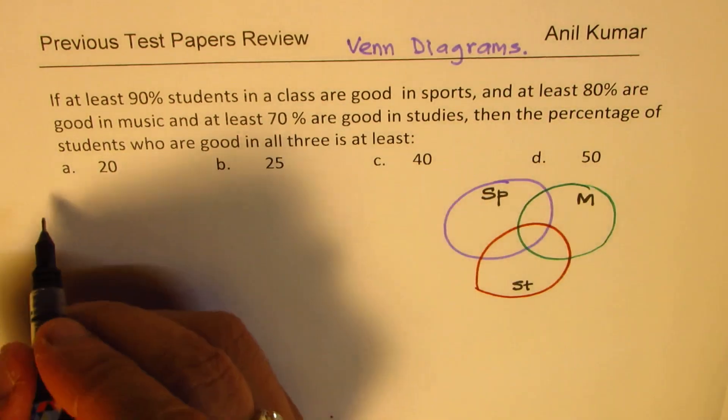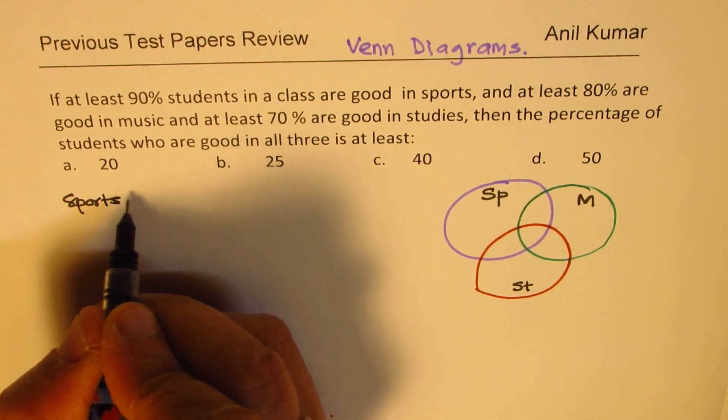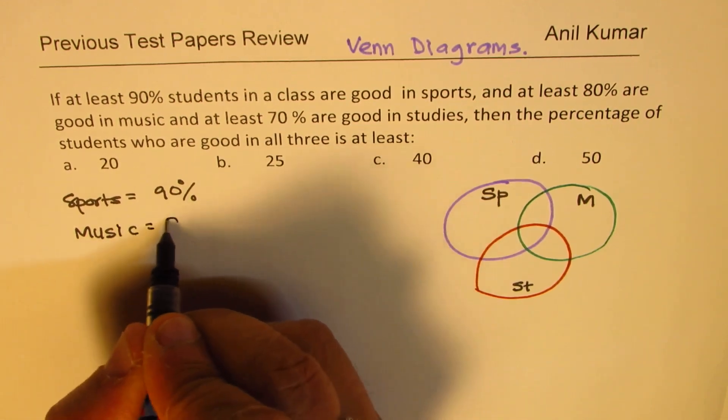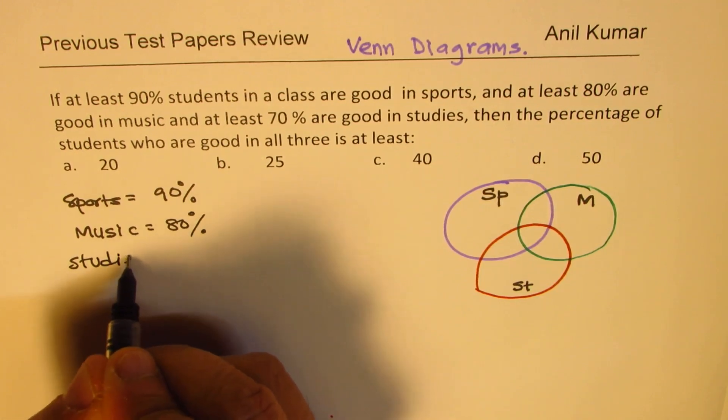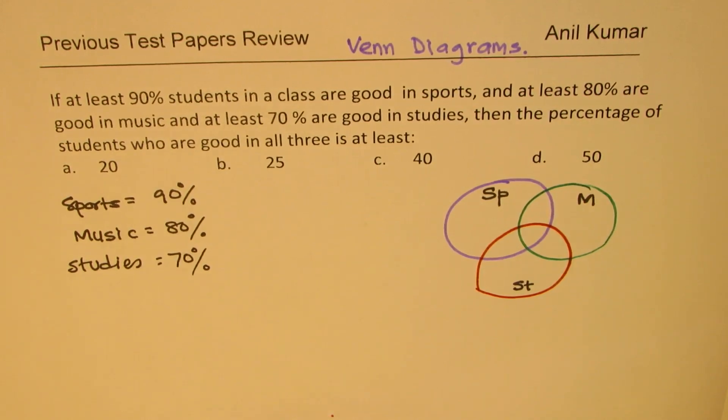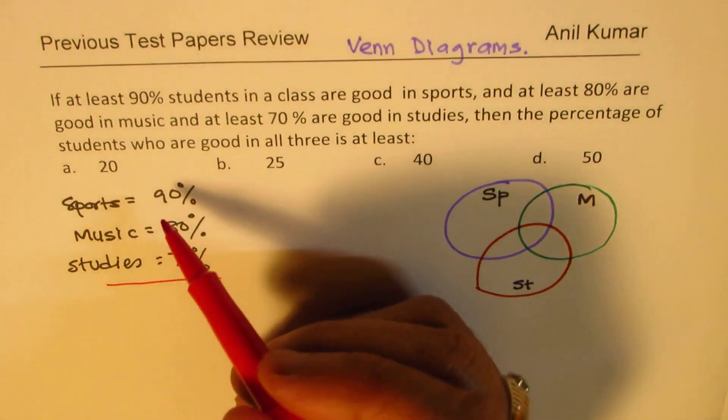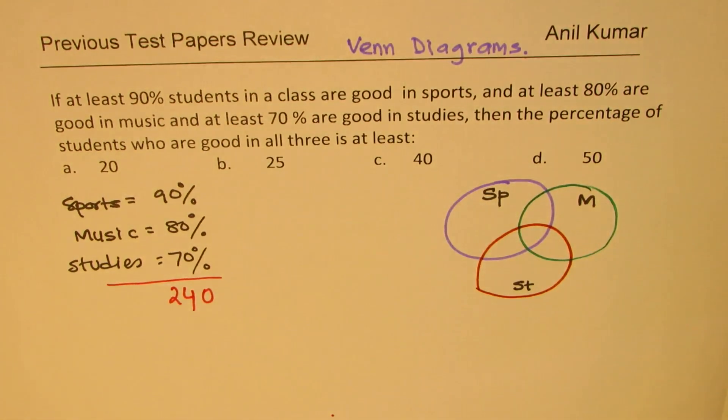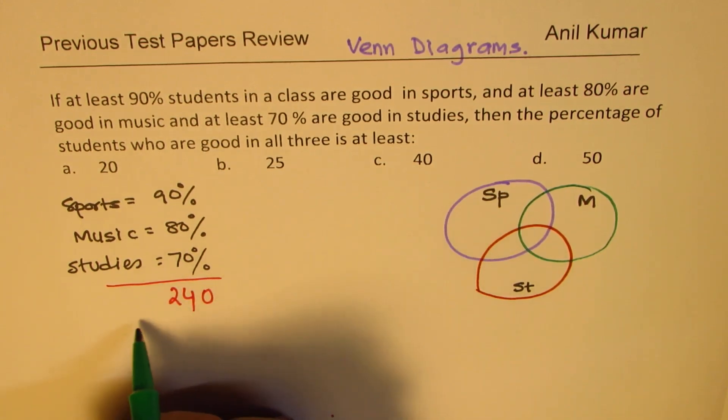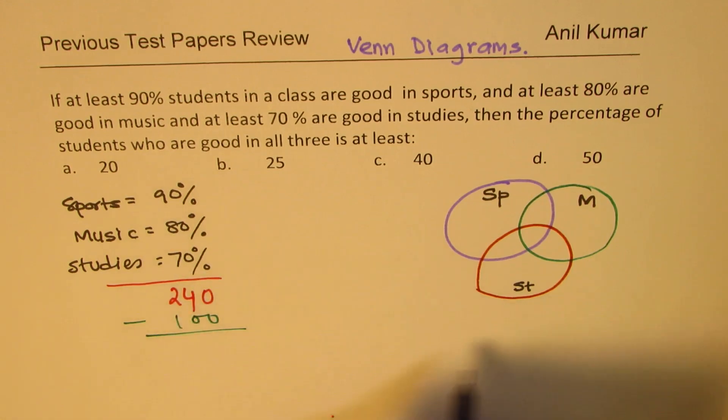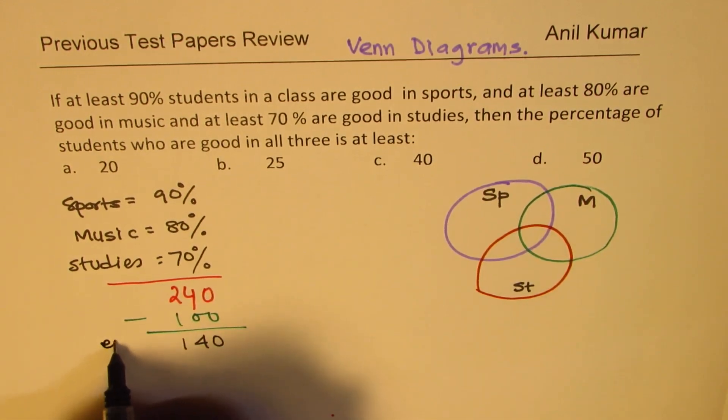Now from the data given, we are saying sports 90%, music 80% and studies 70%. Now clearly, you'll see that this total is pretty high. So if you add this up, what do you get? You get 17 and 7, 240 you get. Now 240, we're talking about percents means that we have something extra here. We can only accommodate 100. So what is extra? The extra which we need to adjust is 140. So that is kind of extra.